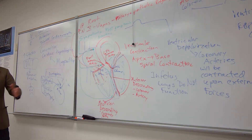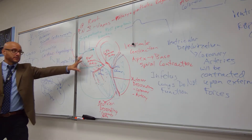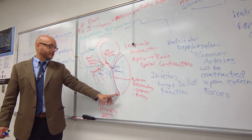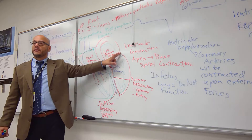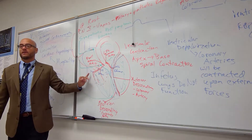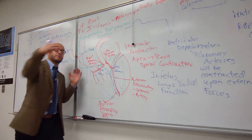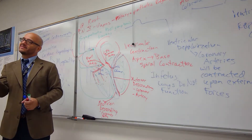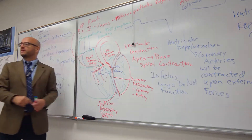For coronary circulation drainage, we have the great cardiac vein, the middle cardiac vein, and the small cardiac vein. They all drain on the back side into the coronary sinus, and the coronary sinus dumps directly into the right atrium.